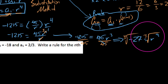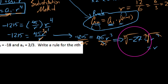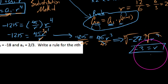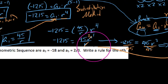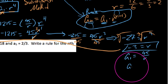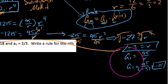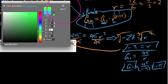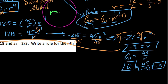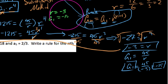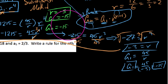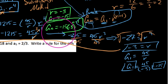Now we need to solve for r, which means we're going to divide both sides by 45. So 1215 divided by 45 is 27, giving us negative 27 equals r cubed. To undo the cube, we take the cube root of both sides: the cube root of r cubed is just r, and the cube root of negative 27 is negative 3. So r equals negative 3. To find a1, we plug back into a1 equals 45 over r: a1 equals 45 divided by negative 3, which is negative 15. So our rule is: a sub n equals negative 15 times negative 3 to the n minus 1.